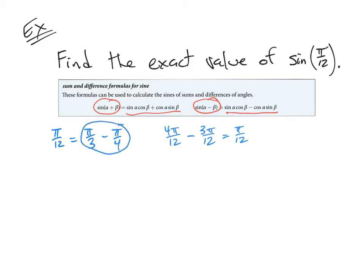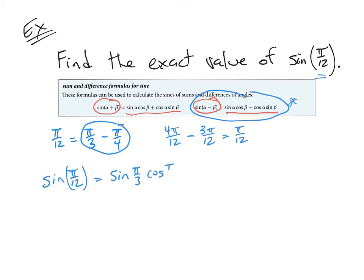Using this fact along with the difference formula, sine of pi over 12 can be rewritten as sine of pi over 3 times cosine of pi over 4, minus cosine of pi over 3 times sine of pi over 4. I did that by applying the difference formula, because pi over 12 is the same as pi over 3 minus pi over 4. So pi over 3 is alpha, and pi over 4 is beta.